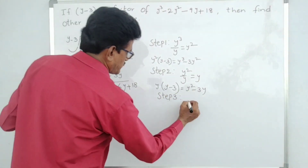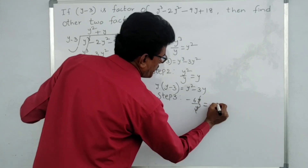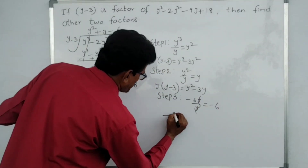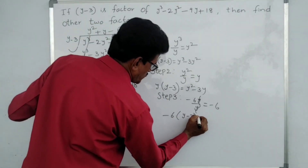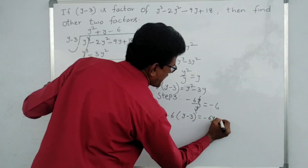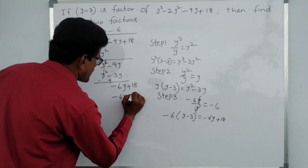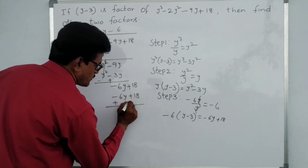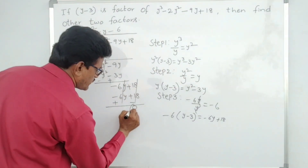Step three: once again first term by first term. Minus 6y divided by y — y and y cancel — we get minus 6. Write minus 6 here. Minus 6 into (y minus 3): minus 6 into y is minus 6y, minus 6 into minus 3 is plus 18. Write minus 6y plus 18. Do subtraction — change the symbol, both terms cancel, remainder is zero.